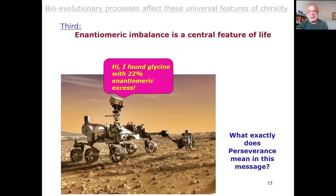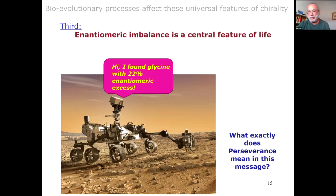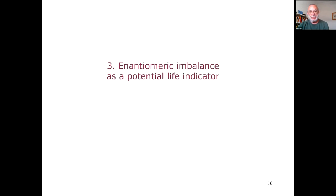The third special feature is that an enantiomeric imbalance is a central feature of life. So if Perseverance sends the message 'I found glycine with 22% enantiomeric excess,' how should we interpret that specific value? Let us now talk about enantiomeric imbalance as a potential life indicator.